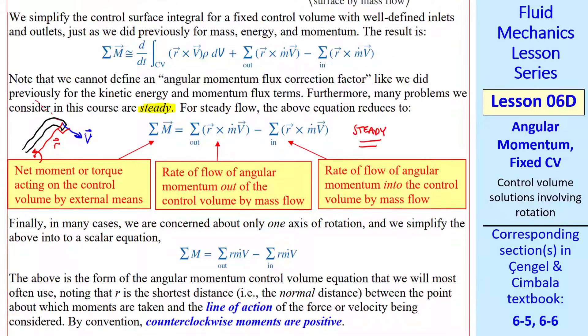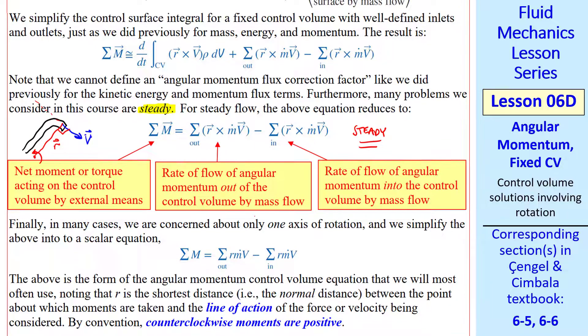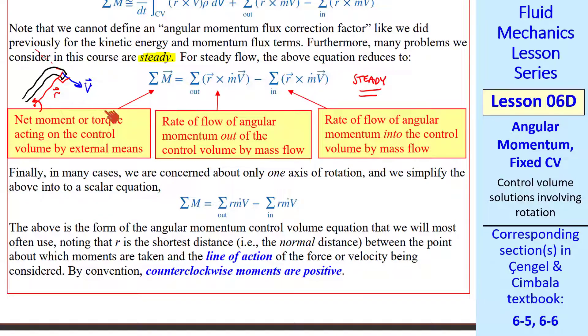We also dropped the unsteady term. We'll only consider steady problems here. For further simplification, we're generally talking about moments in one plane, in this case, around this axis that points out of the page. So we can turn this into a scalar equation. When we're analyzing about this axis, R cross M dot V will also be a moment about that same axis. So the scalar equation becomes sigma M equals sigma out R M dot V minus sigma in R M dot V. This is our most useful or workhorse equation for angular momentum type problems.